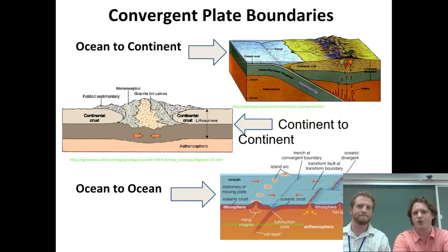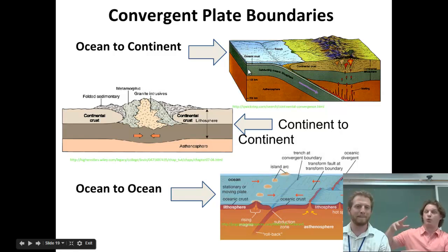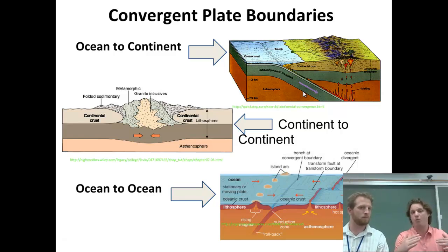Let's look at the first one - ocean to continent. We have really thick continental crust and thin oceanic crust moving towards each other. Because the oceanic crust is thinner and more dense, it's going to go underneath the continental crust.